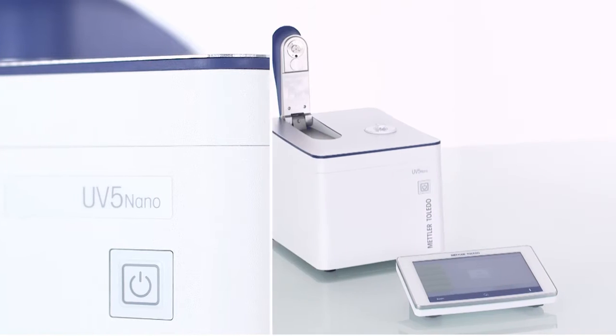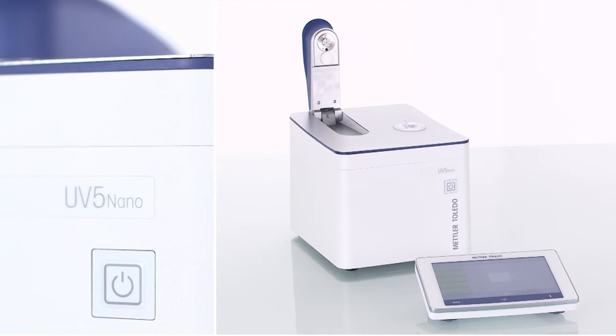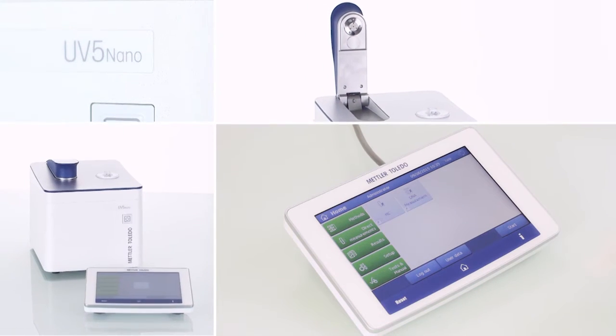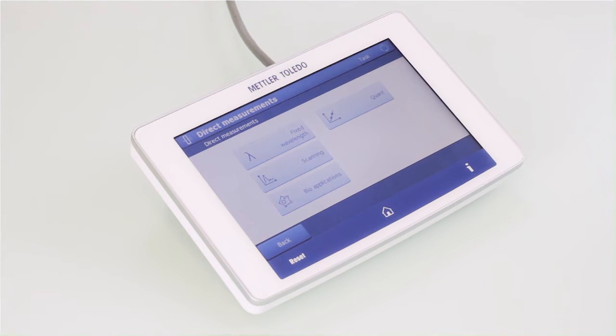DNA measurements are made simple with Mettler Toledo's UV5 nano microvolume instrument. For quick measurements, simply select a direct measurement from the terminal home screen.